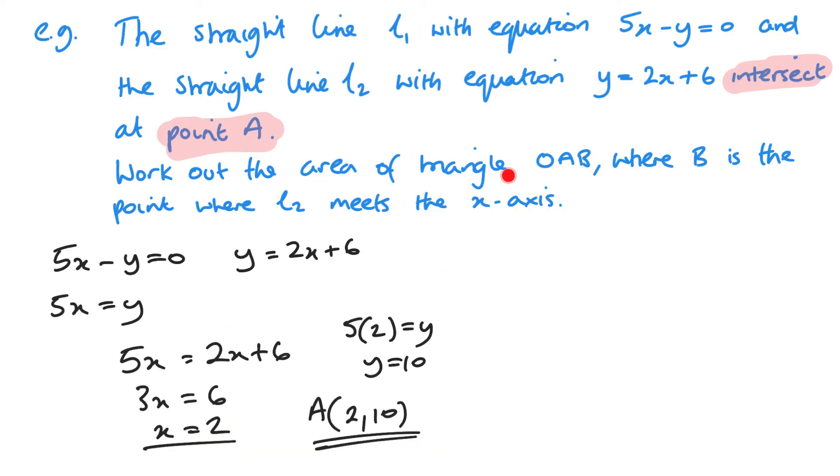Now I need to work out the area of the triangle OAB, which means I need to know what B is. And B is the point where L2 meets the x-axis. So L2 is the equation y equals 2x plus 6. And it's going to meet the x-axis when y equals 0.